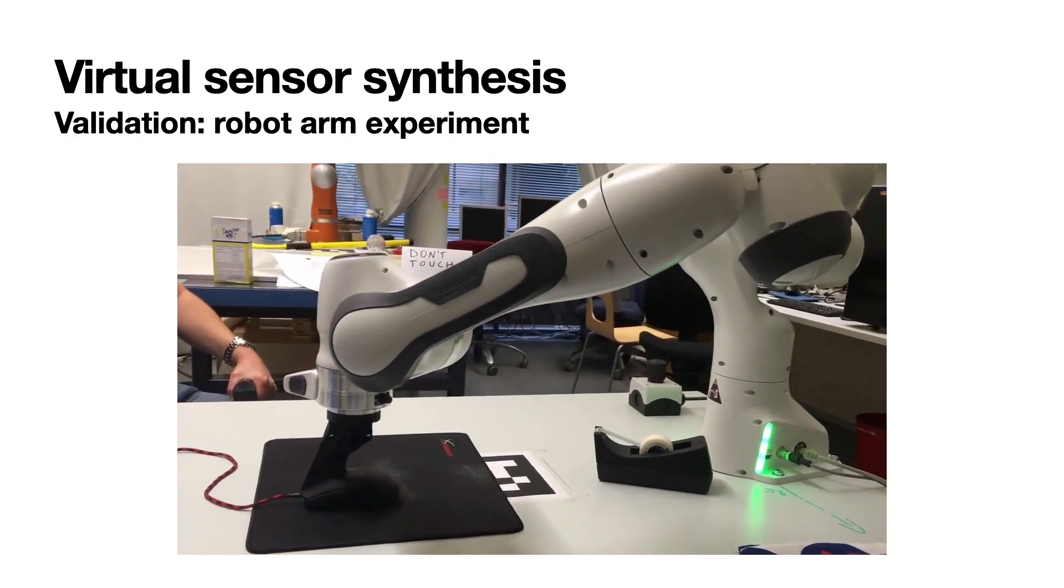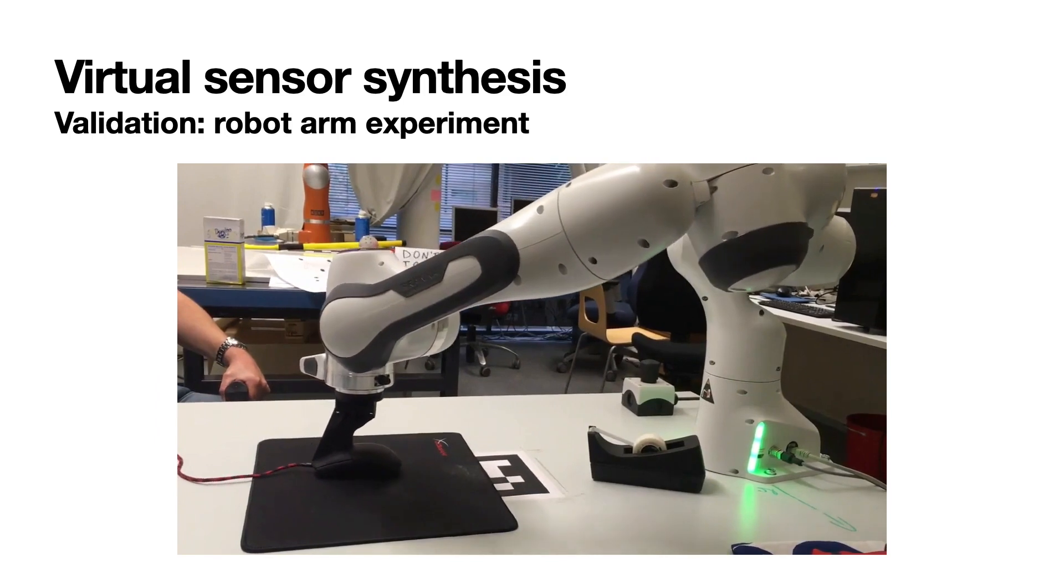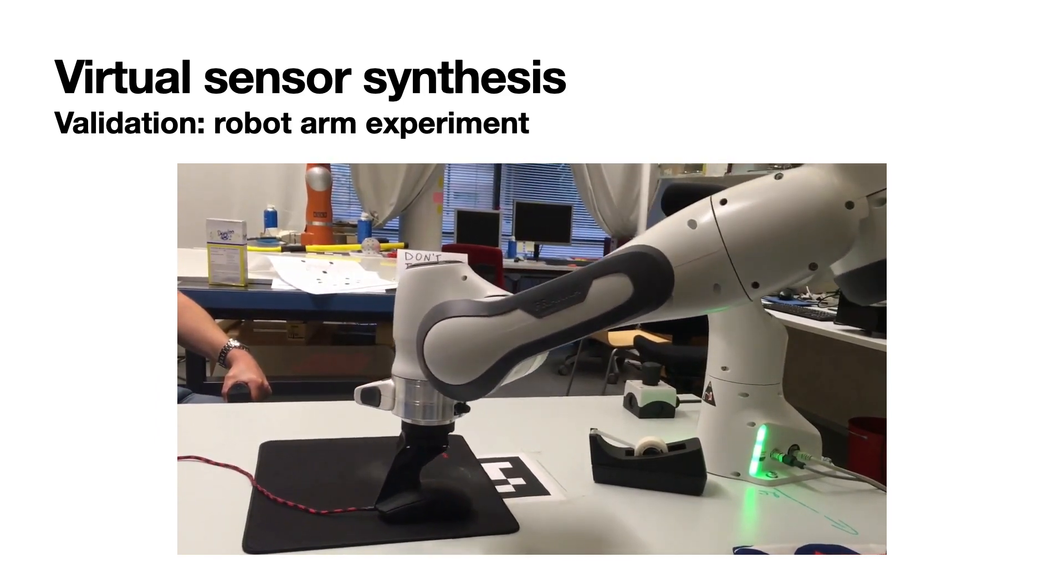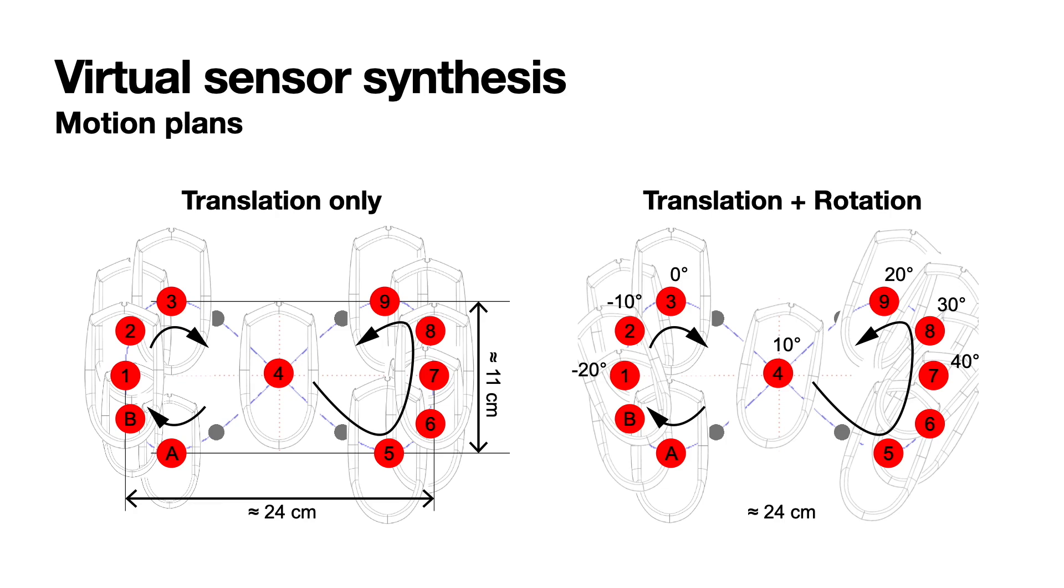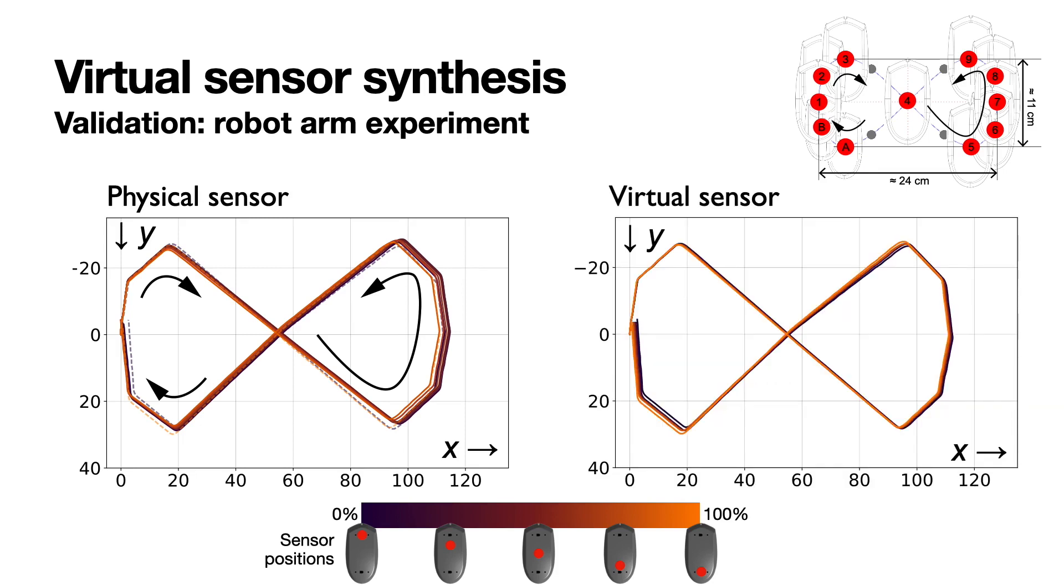To validate our virtual sensor model, we performed a robot arm experiment. The robot arm moved the physical sensor mouse and the virtual sensor mouse precisely, and we prepared two different motion plans. The first plan moves the mouse without a rotation, and the second one adds a rotation on it. Without rotation, the sensor captures the planned movement precisely, and all the sensor positions generated the same path. We also confirmed the virtual sensor we synthesized is generating the same path to the physical sensor.